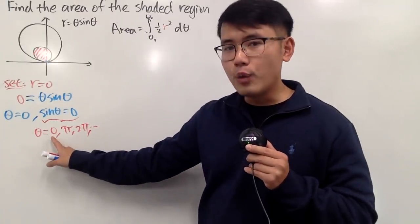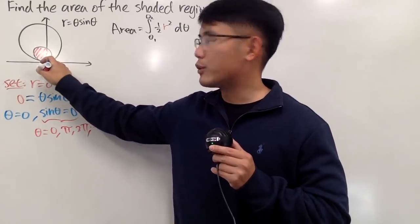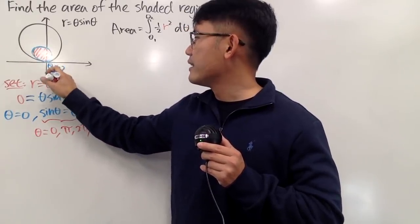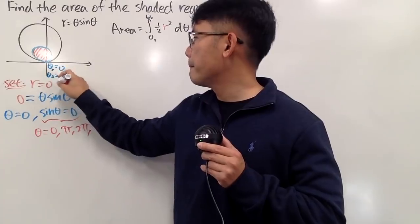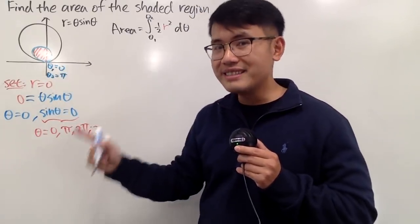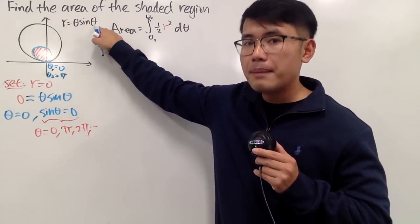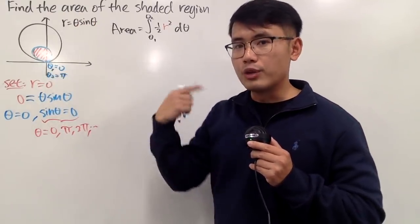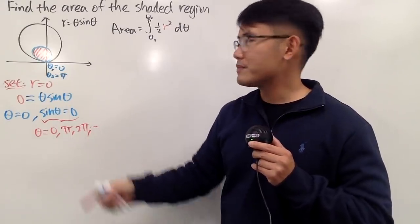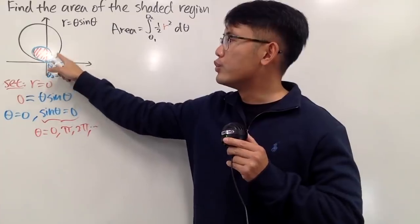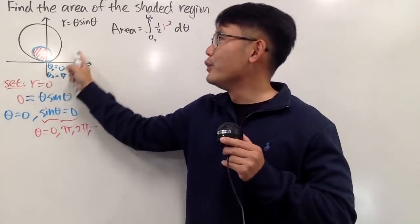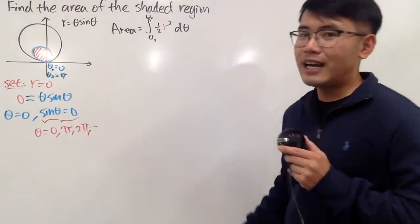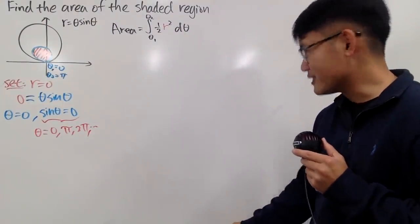Starting at theta equals 0, you turn and make a loop, and when you hit the origin again, theta 2 will be pi — and that closes the loop. Because the function has not just sine theta but also the factor theta, if you increase theta the values get bigger. So from pi to 2 pi you get a bigger loop, from 2 pi to 3 pi even bigger, and so on. So theta 1 is 0 and theta 2 is pi.